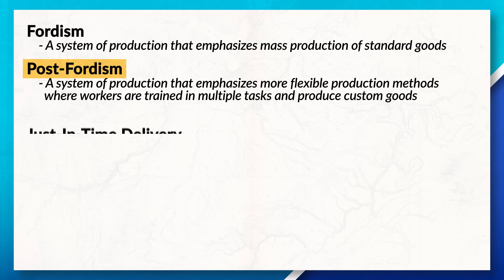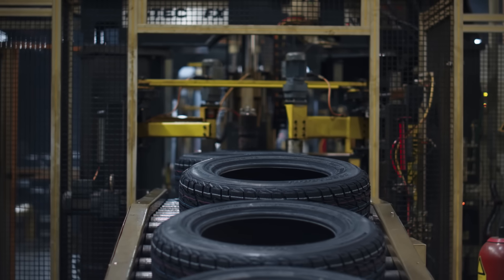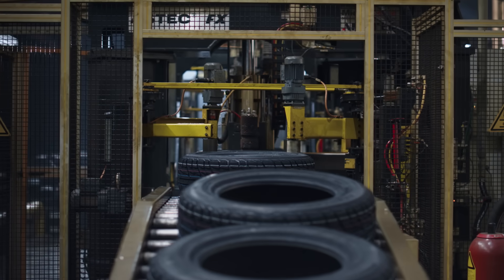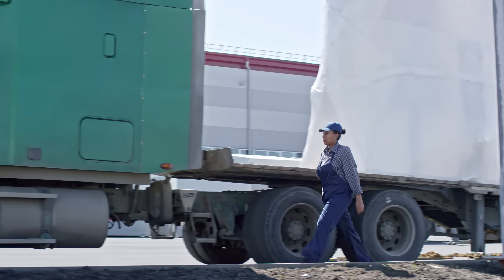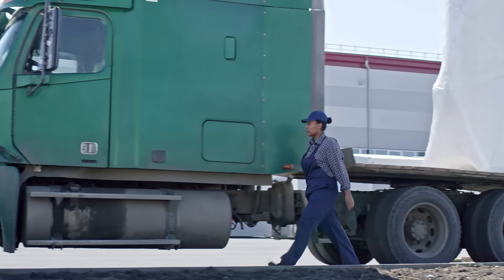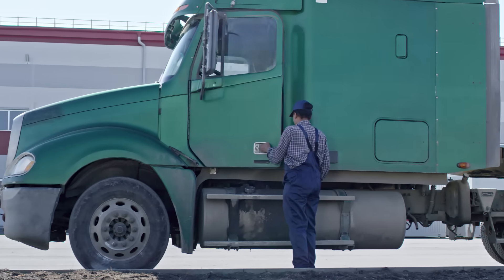Post-Fordism also tends to use local decisions when it comes to production, with production often being decentralized, meaning that production no longer happens all in one location. Instead, goods are often produced in a variety of stages and locations. One way this is done is by utilizing just-in-time delivery, where materials, parts, or products are delivered to a manufacturing facility precisely when they are needed, helping reduce costs and waste by only having products arrive when they are needed.